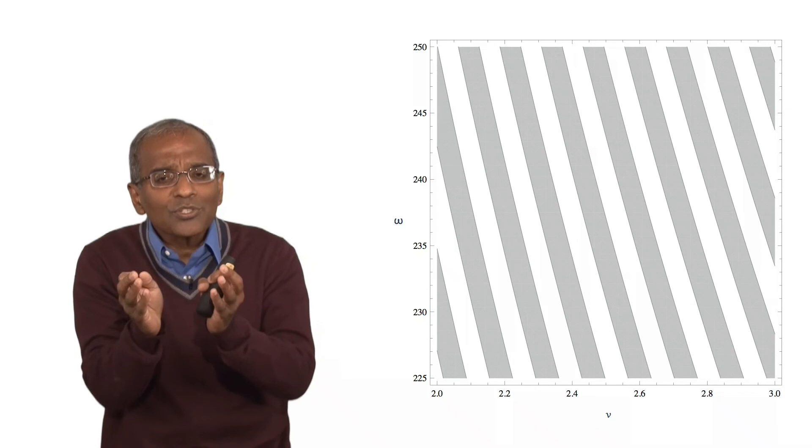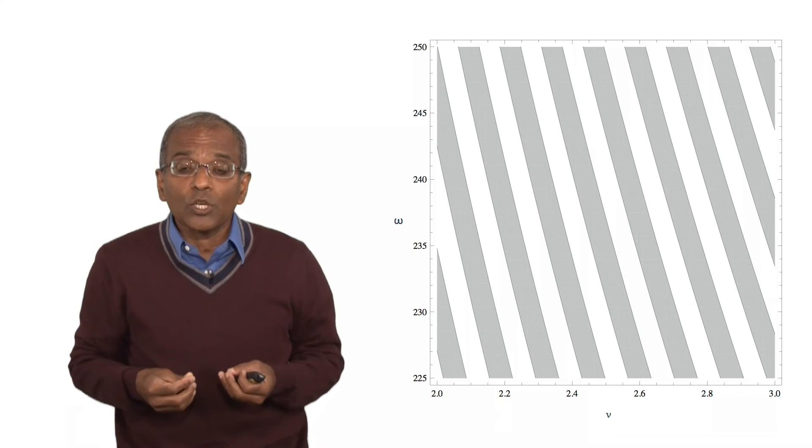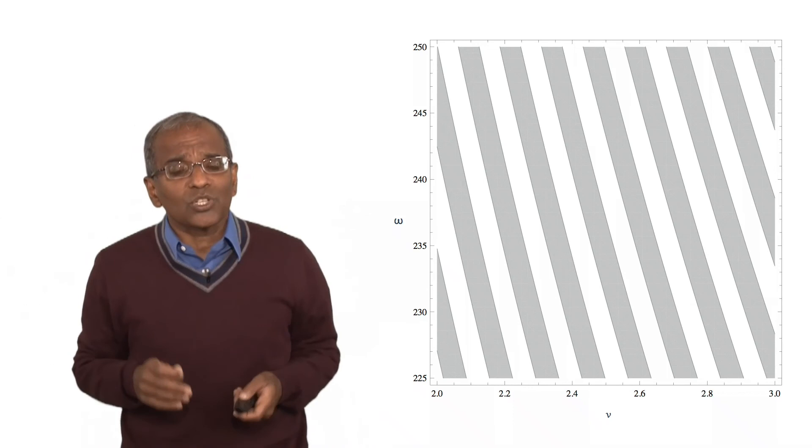The shaded regions represent combinations of velocity and angular velocity, for which the outcome will be a head. And this is what the picture looks like.